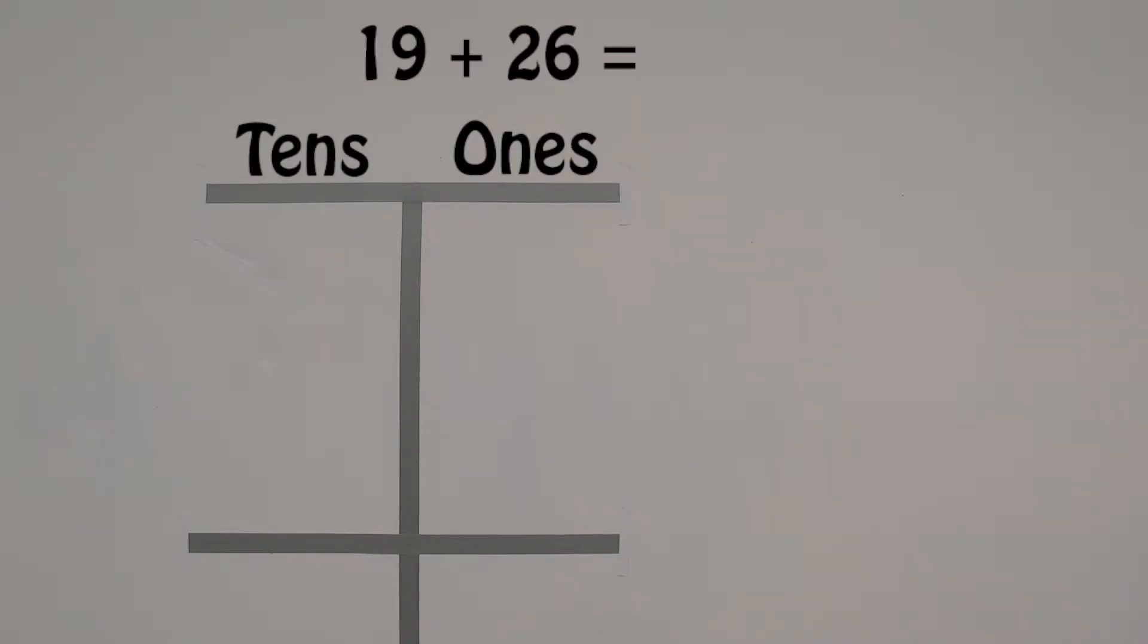Today, we are going to add two numbers with renaming. Let's add 19 and 26 using a place value chart.